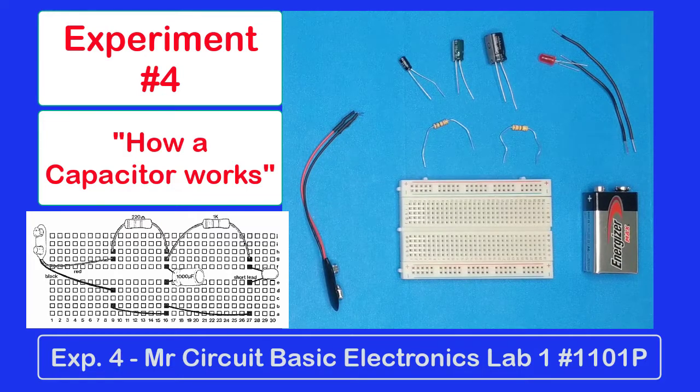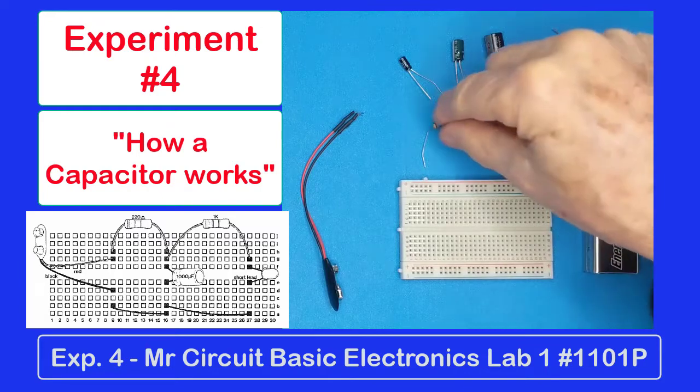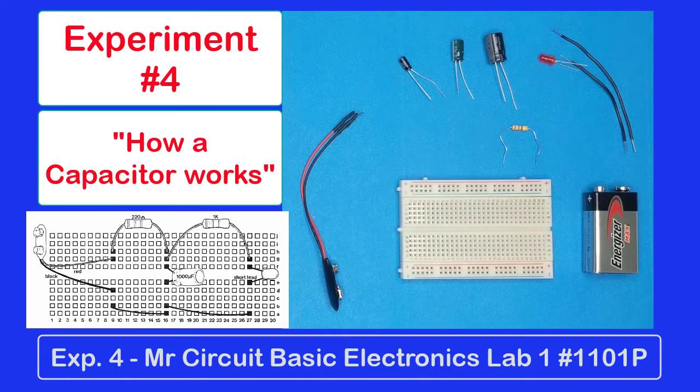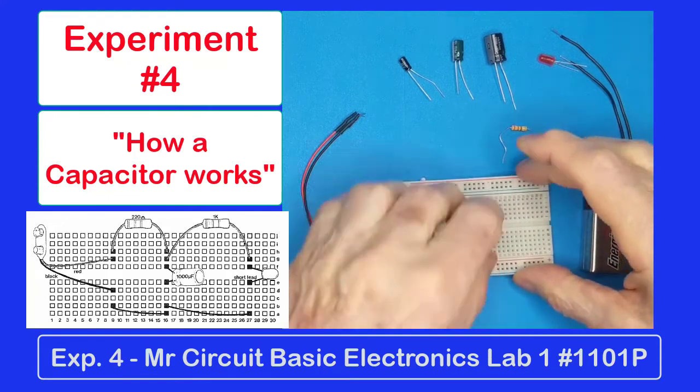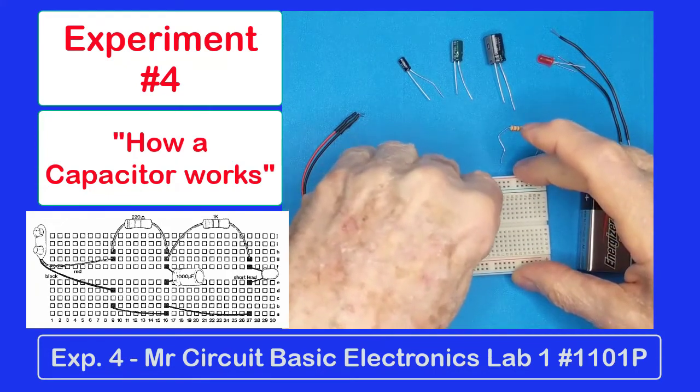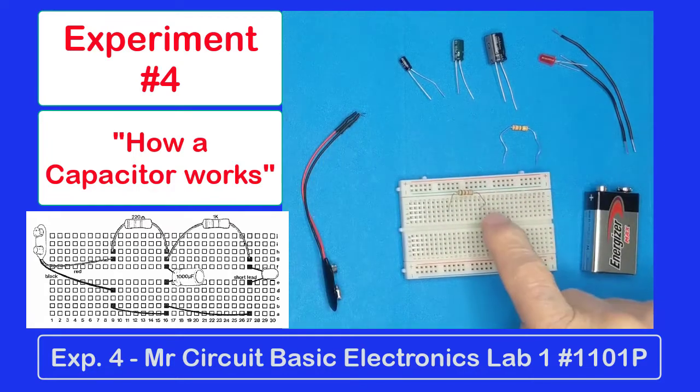The first one I'm going to put in is the 220 ohm, and it looks like from the pictorial that I need to run that from 9 over to 16. So I'm going to do that one from 9 over to 16. So those are those two groups of five holes here.